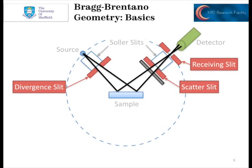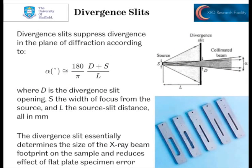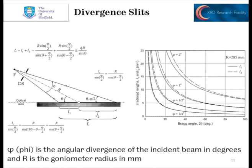We've then got other apertures: the divergence slit on the primary side, and on the secondary side we have scatter slits and receiving slits. The divergence slits suppress divergence in the primary beam, effectively controlling the size of the footprint of the X-ray beam onto the sample. By using smaller divergence slits, we reduce the effect of the flat plate specimen error because we're looking only at those parts closer to the diffraction circle. We can define two illuminated distances: L1 lying between the source and the centre of the sample, and L2 lying between the centre of the sample and the detector. The graph plots L1 and L2 for four common phi settings — slit sizes of 2 degrees, 1 degree, half a degree, or a quarter of a degree.